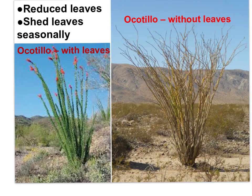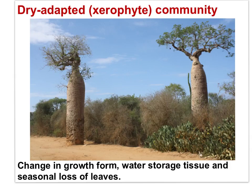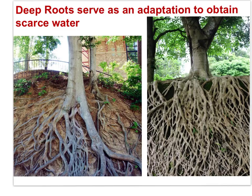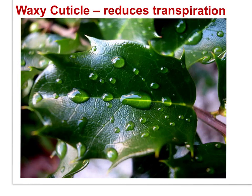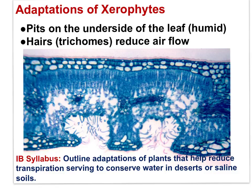Xerophytes, even with reduced leaves, will shed them seasonally to avoid dehydration during the hottest, driest months of the year. Baobab trees in Madagascar show a reduced canopy of leaves and a fleshy trunk typical of water-storing tissue. Deep roots also serve as an adaptation to obtain scarce water in a desert, or where salts have accumulated close to the surface of the soil. Waxy cuticles or a reduced number of stomata would also serve to reduce transpiration. Xerophytes often display a leaf form where the lower tissue layers have indentations or pits within which the stomata are located.